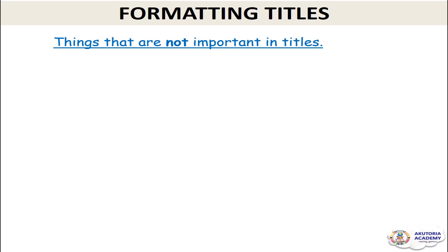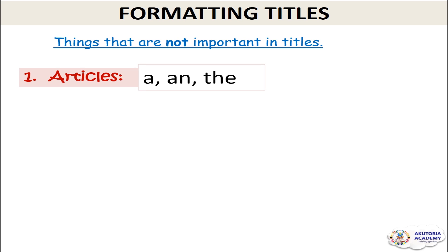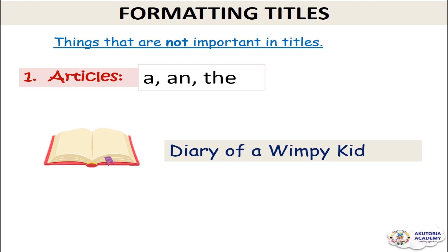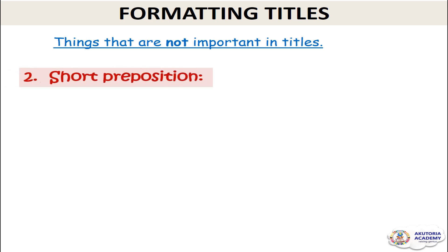Now, what are the things that are not important in titles? The first are articles — articles like 'a,' 'an,' and 'the' are not important in titles. For the book title 'Diary of a Wimpy Kid,' 'Diary' is the first word and 'Kid' is the last word. 'Wimpy' is an important word so it should be capitalized, but the article 'a' is not important so you write it with a small letter.